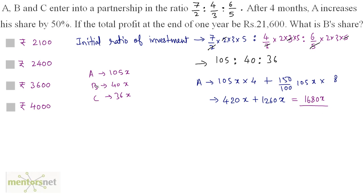Let us calculate B's share. B is investing for 12 months, so 40X times 12. C is also times 12 because C is also investing for 12 months. We have the ratio of the investments. A is to B is to C is equal to 1680X is to 480X is to 432X. X gets cancelled out and when you simplify this, you get 35 is to 10 is to 9.